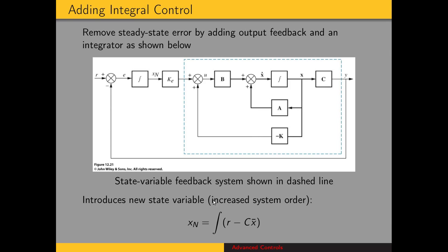Let me talk about this new state variable. We have x sub n, that's the output of the integrator. That state variable is multiplied by the gain k sub e, which is the error gain. So now we have the gains K that match the order of the original system plus an additional gain ke, which allows us to place this new pole that comes from adding the integrator.